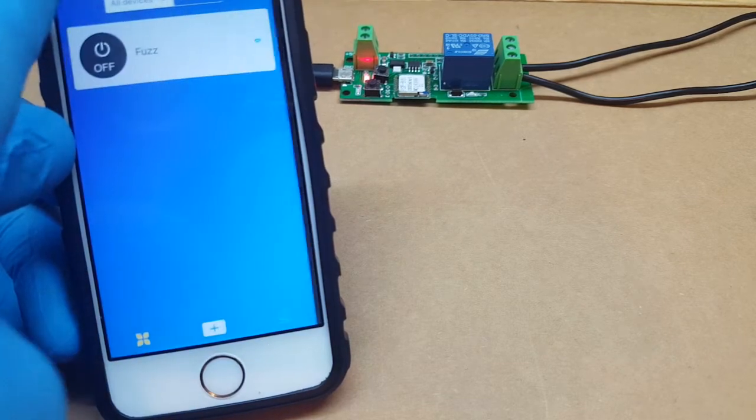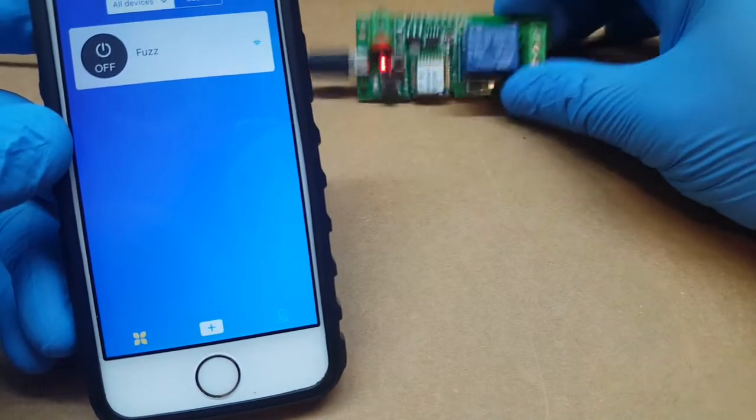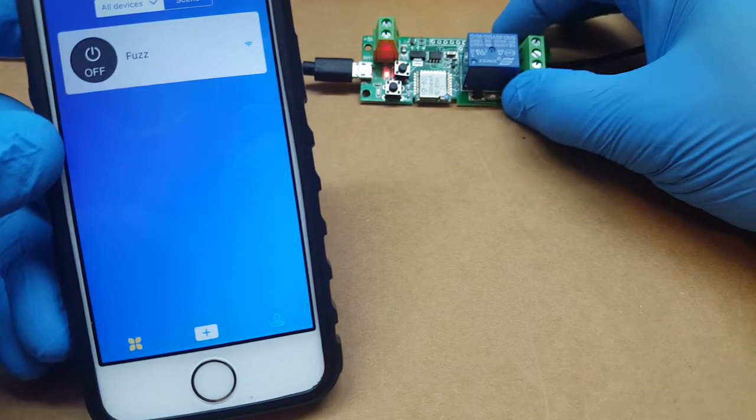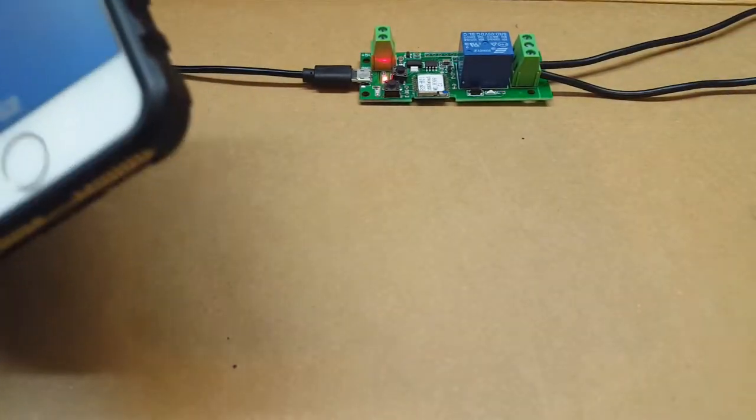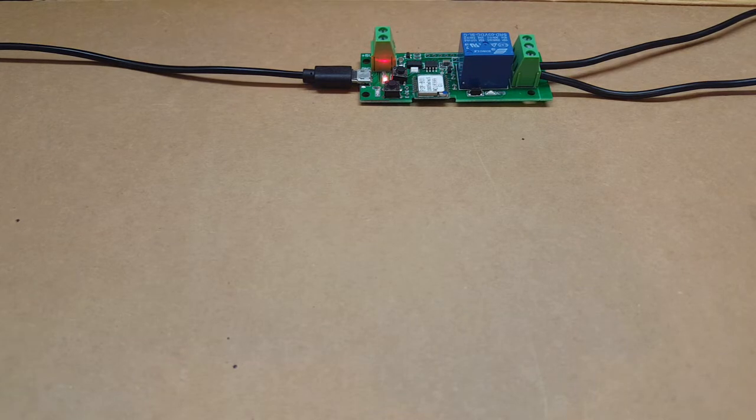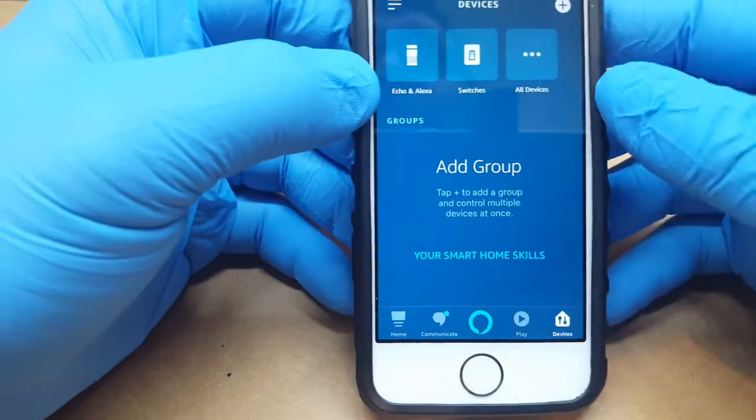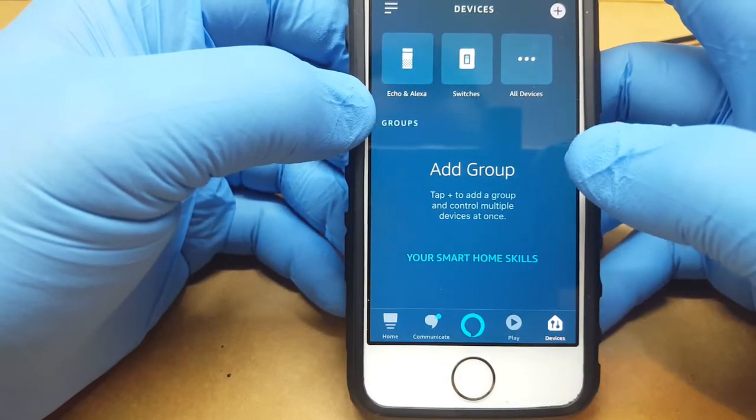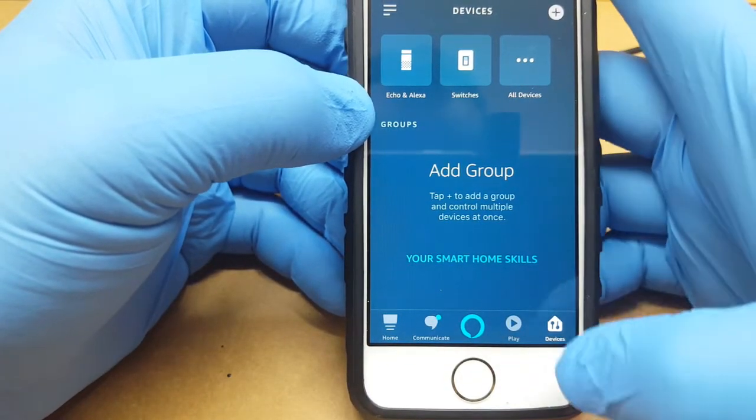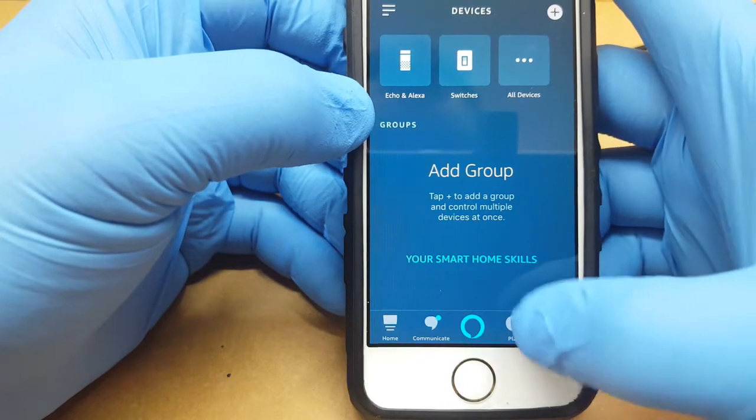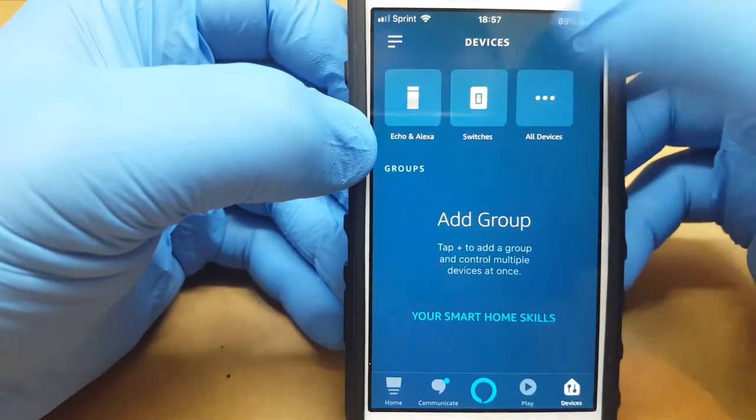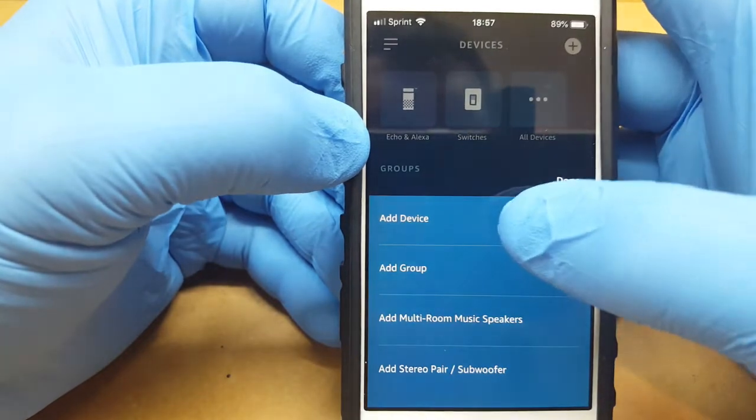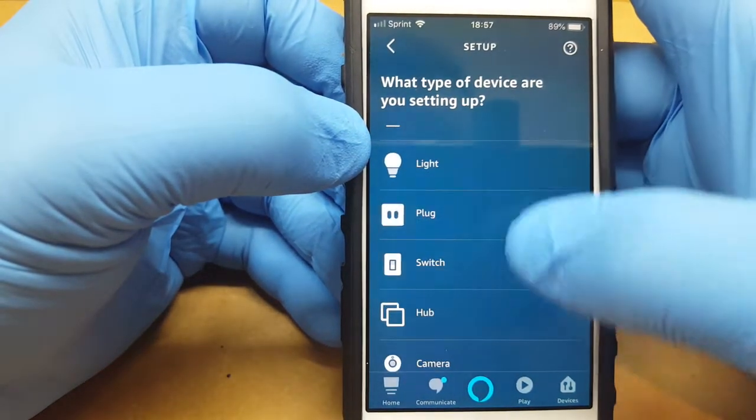Now this is the app that you'll need to set up the device. Now in order to get this to work with Alexa, you'll need to pull up your Alexa app. And what we'll do is under Devices, you'll just want to add a device.